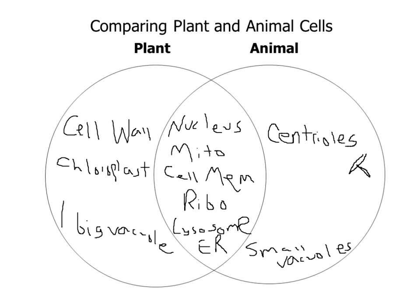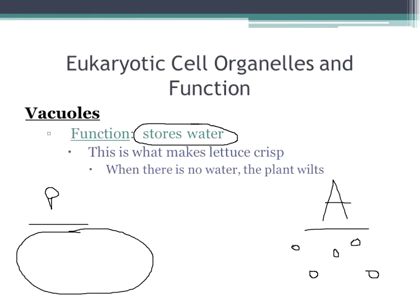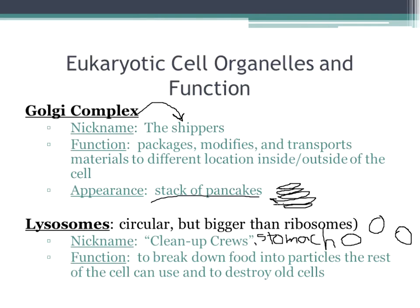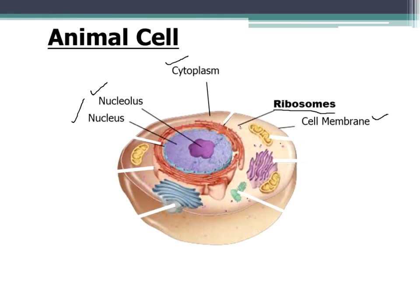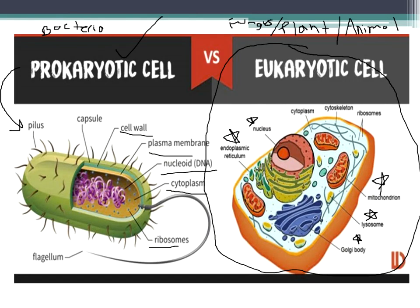So guys, I hope you learned about all these organelles that we went over today. I also hope you learned about the prokaryotic and eukaryotic cell and how they are different. It's important to know that and all the organelles of the cell — that's what you're going to learn about in lessons 202 and 203. Thank you guys again for coming. If anybody has any questions, you can put them in the bottom. Next week we'll talk about photosynthesis and cellular respiration. Thank you.